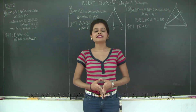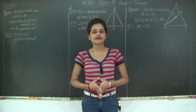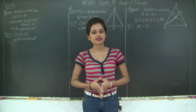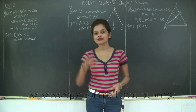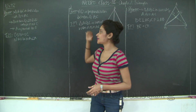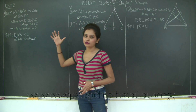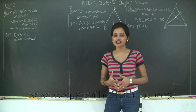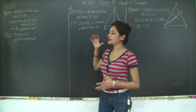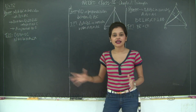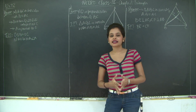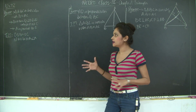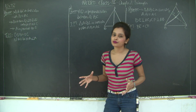Hello students, let us start with exercise 7.2 of chapter 7, Triangles. The first question — we have been given some data but there is no diagram, so we'll read out the data and then draw the diagram and see what is to be proved.